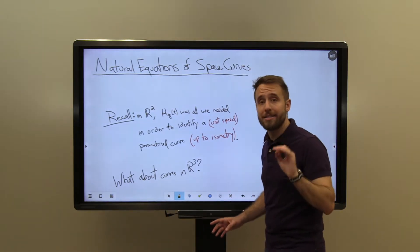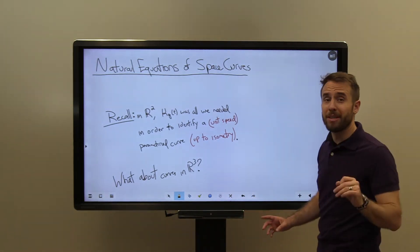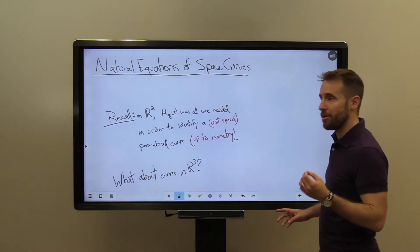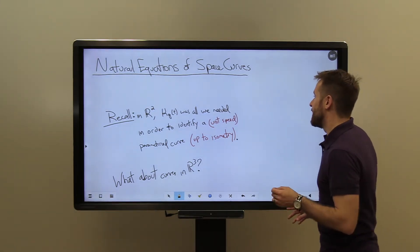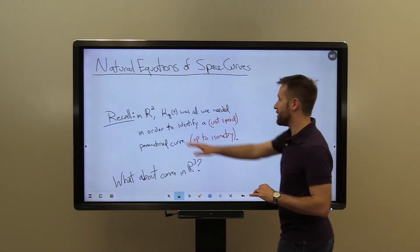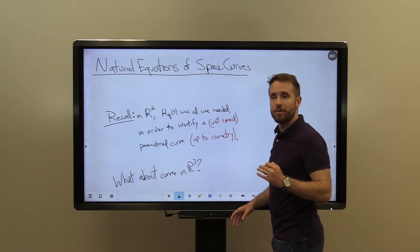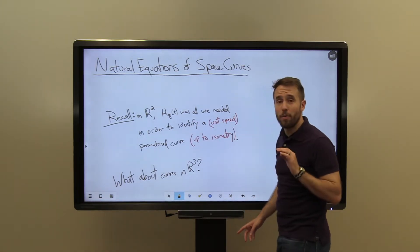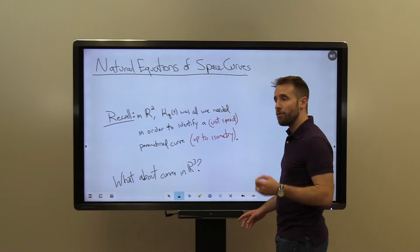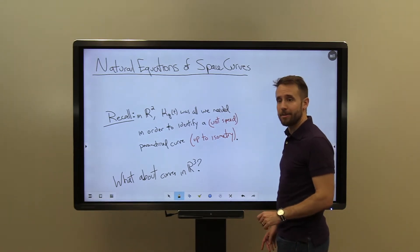We saw a similar result to this back when we were looking at plane curves, curves in R2. Recall that back when we looked in R2, the curvature function kappa_g was all that we really needed to know in order to identify our plane curve.